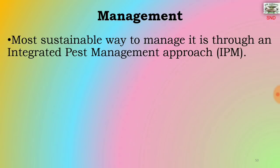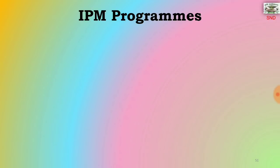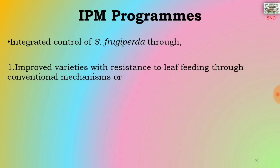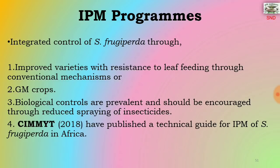Management: the most sustainable way to manage fall army worm is through an integrated pest management approach, i.e. IPM. The Food and Agriculture Organization has proposed a five-year program of action to help smallholder farmers, their organizations, public institutions, national governments and development partners to quickly respond to the challenges of fall armyworm infestation. Integrated control of Spodoptera frugiperda includes improved varieties with resistance to leaf feeding through conventional mechanisms or GM crops. Biological controls are prevalent and should be encouraged through reduced spraying of insecticides. CIMMYT in 2018 published a technical guide for IPM of Spodoptera frugiperda in Africa.